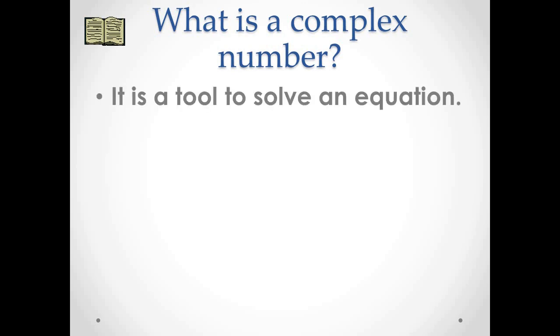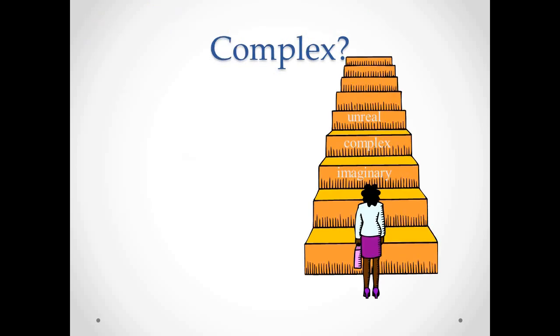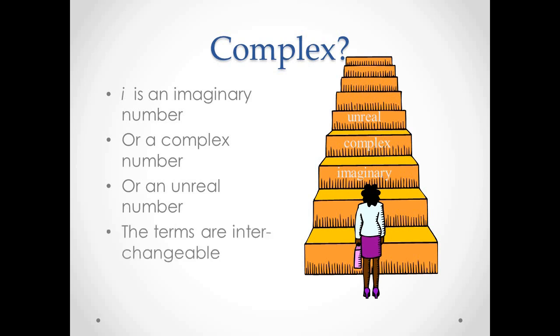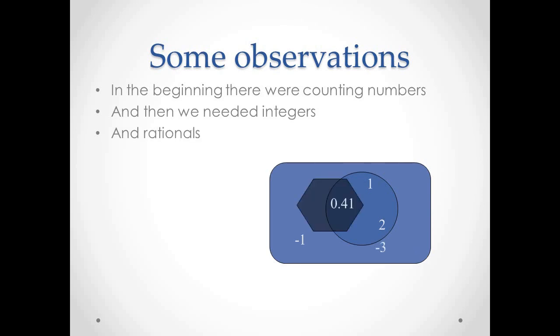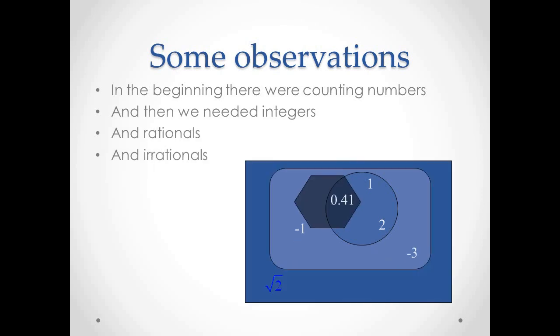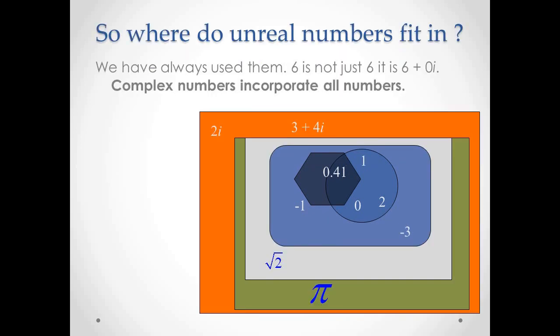So, what is a complex number? The number i, whose square is negative 1, is called the imaginary unit. Complex numbers are defined in terms of the imaginary unit. i is an imaginary number, or a complex number, or an unreal number. The terms used are interchangeable. In some observations, in the beginning there are counting numbers, and then we needed negative numbers, and the rational numbers, and the irrational numbers, and these are what we know as the real numbers.